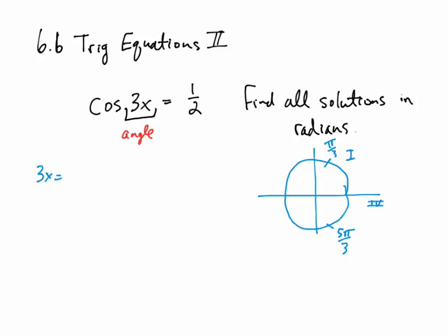So we say 3x is equal to pi over 3, and then 3x is equal to 5 pi over 3. Because this says to find all solutions and there's no interval specified, we need to include the 2k pi term. It's always good practice to include this general term for these types of equations, since we don't know if we'll need it until the end of the solving process.